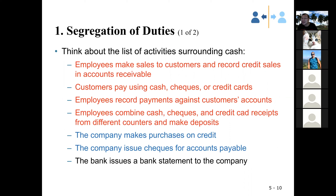But segregation of duties is not perfect. What about collusion? The accountant and the person actually making the deposit could decide to collude, split the money, and steal together. That can also happen. So the best way is to hire a trusted family member to be the accountant.